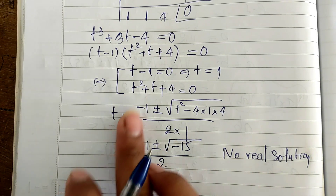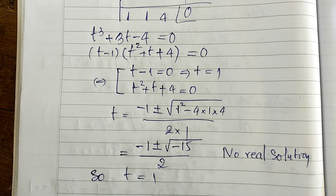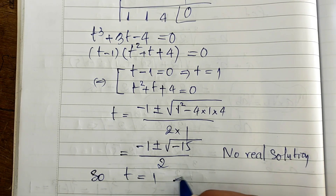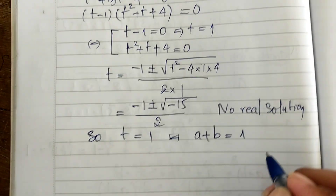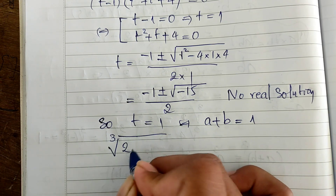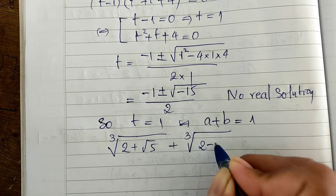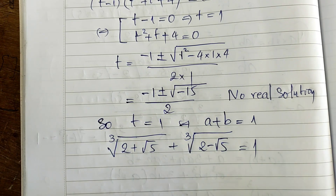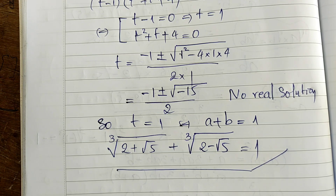Since the quadratic has no real solution, we conclude t equals 1. Since t equals a plus b, we have a plus b equals 1. Therefore, cube root of (2 plus square root of 5) plus cube root of (2 minus square root of 5) equals 1. That's our solution. Thank you for watching — if you like my videos, please don't forget to subscribe to my channel for more exciting videos. Goodbye!